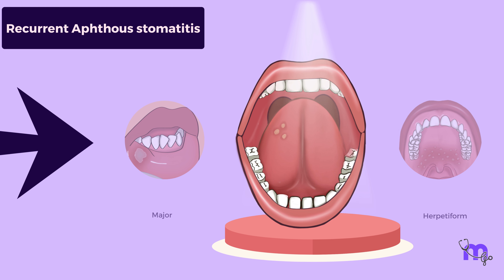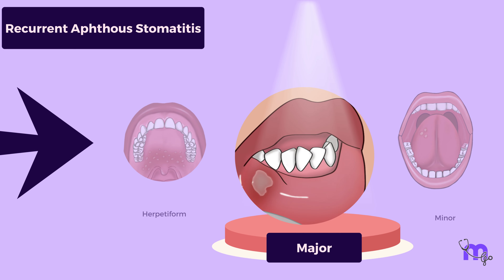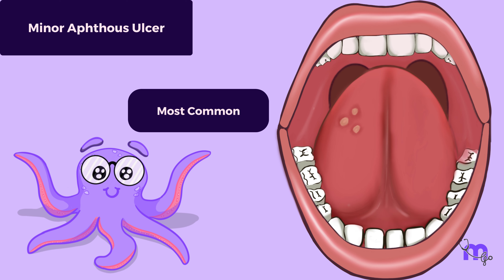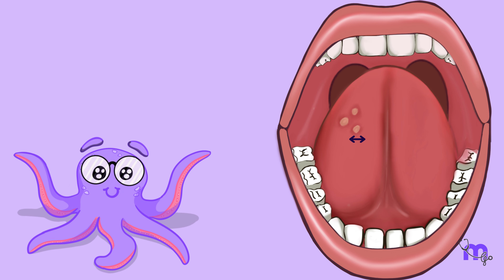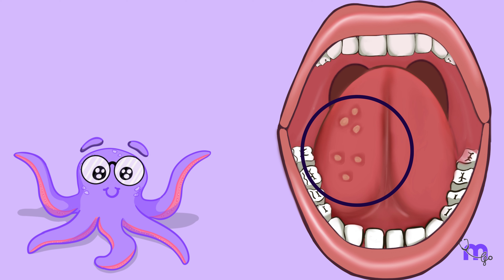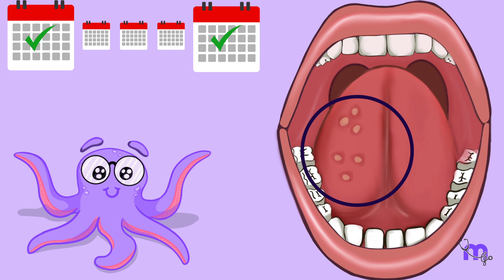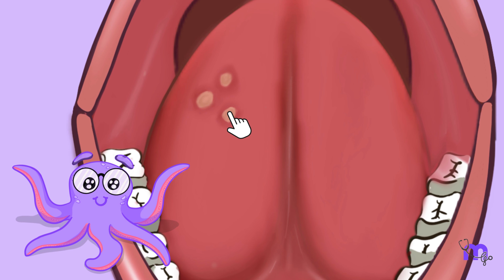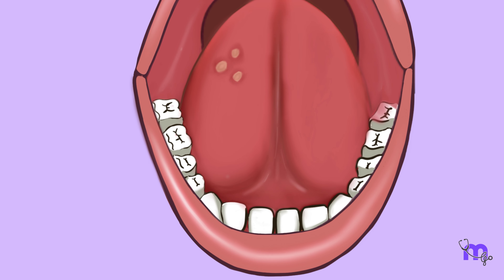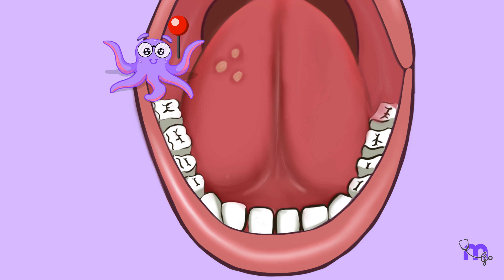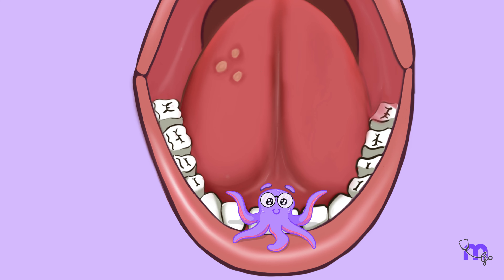Recurrent aphthous stomatitis ulcers can be classified into three subtypes based on their clinical characteristics: minor, major, and herpetiform. Minor aphthous ulcers are the most common type, affecting around 80% of RAS patients. They are typically small, ranging from 0.3 to 1 cm in diameter, appear in groups of 1 to 6, and recur every 1 to 4 months. The ulcers have an erythematous halo and a greyish-white coating called pseudomembrane. They heal completely within 10 to 14 days and leave no scars, developing mainly on the non-keratinized mucosa — particularly the buccal mucosa, labial mucosa, and floor of the mouth.